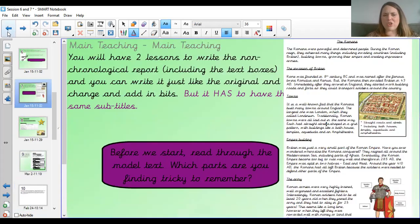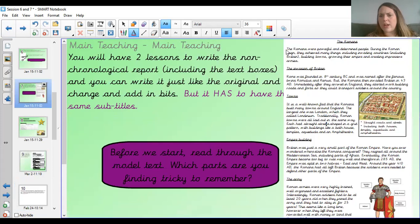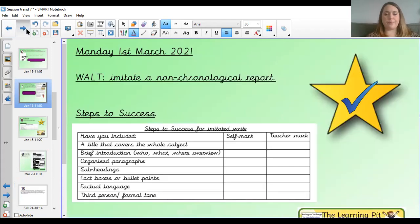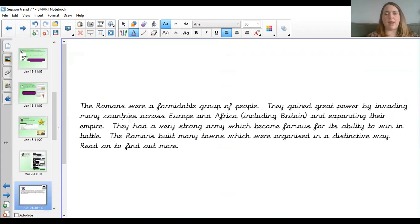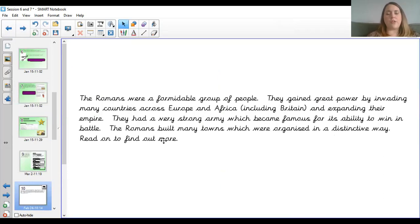Hopefully you can see it's not too similar to the original introduction, but it's got a lot of similarities. I've just put it in my own words. The original one said the Romans were powerful and determined people. During the Roman reign, they achieved many things, including invading countries, including Britain, building towns, growing their empire, and creating impressive armies. So it's different enough to be my own words. I'm happy with that. What I would do now is go on to write my first section.